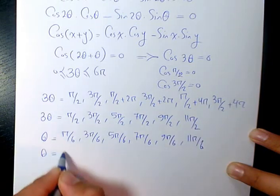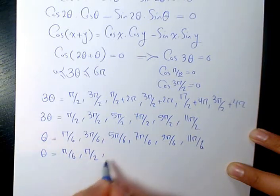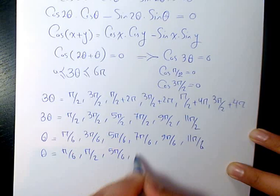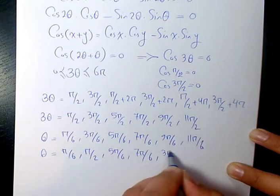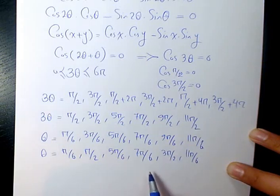When you rearrange it, it's going to be π/6, π/2. When you reduce it, 5π/6, 7π/6, 3π/2, and 11π/6. So these are the final answers to this question.